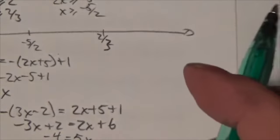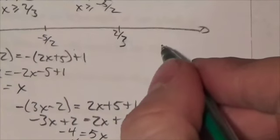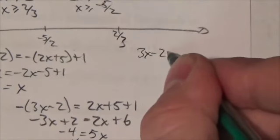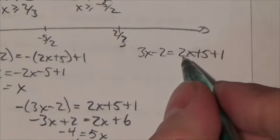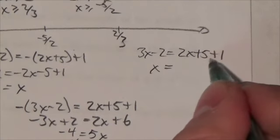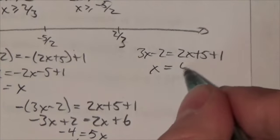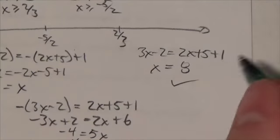Now we move to the interval greater than 2 thirds. Now in this case, our x values are such that everything here will be positive. There will be no need to change the values here. So this will be 3x minus 2 is equal to 2x plus 5 plus 1. I'll bring the 2x over, it becomes x. This is 6 plus 2 is 8. Is 8 greater than 2 thirds? Yes.